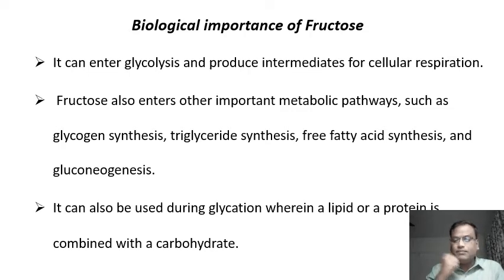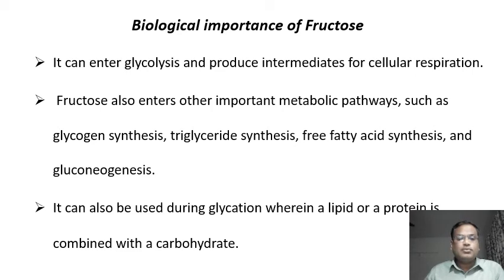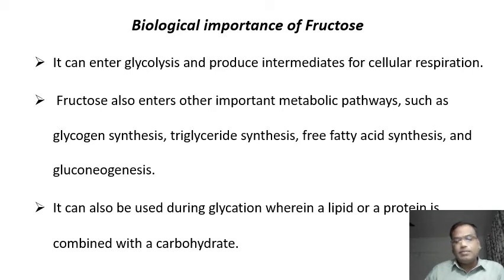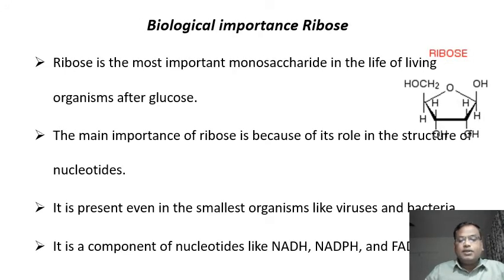Biologically, fructose can be used as an alternative to glucose — it yields the same number of ATPs when it undergoes glycolysis and the Krebs cycle. It can also be used during glycation, wherein a lipid or protein is combined with a carbohydrate. In such cases, fructose is used to produce glycoproteins and glycolipids.